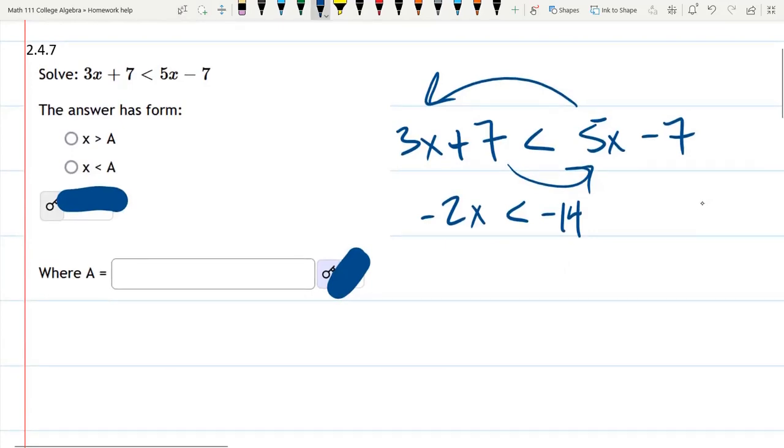We just need to multiply by negative 1 half or divide by negative 2, however you like to think of it. So that gives us positive 1x. 14 times negative 1 half is positive 7. But remember, when you multiply by negative, you need to flip your inequality sign around.